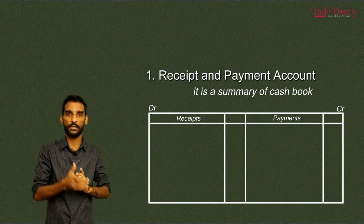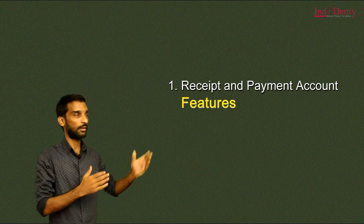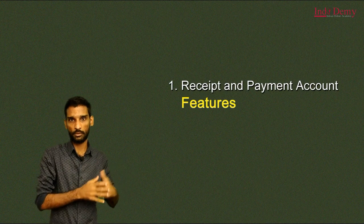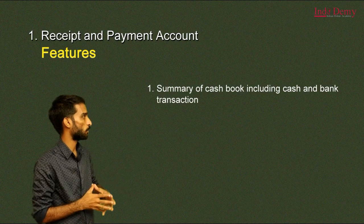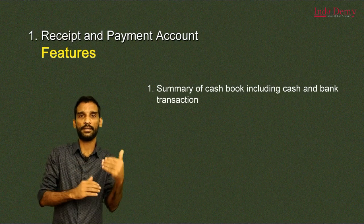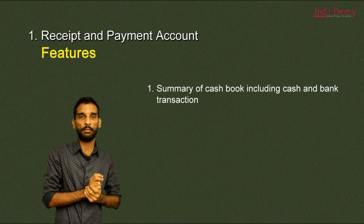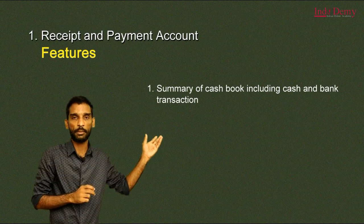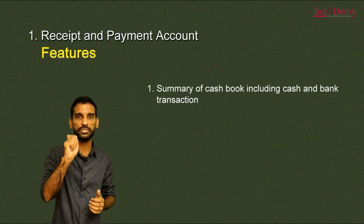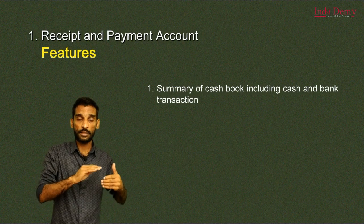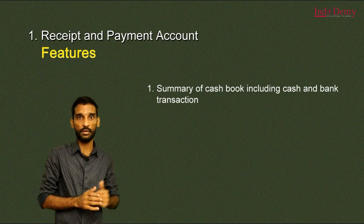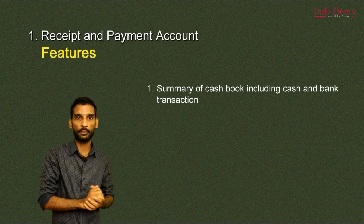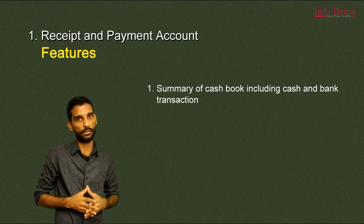This is a summary of the cash book, including both cash transactions and bank transactions. When we record the receiving fee, we put the total amount in the cash book. We summarize all entries into one total amount — every transaction is recorded once in this account.